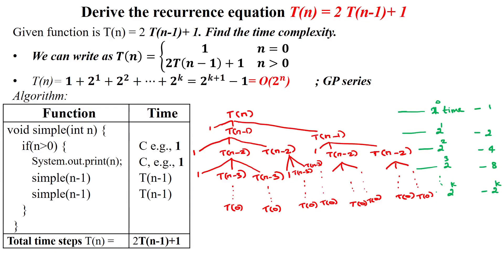Hello everyone. We are going to derive the recurrence equation for the given algorithm. This is a recursive algorithm. The if condition will run for one unit of time, that means a constant amount of time. Inside the if loop, whenever n is greater than zero, this statement will run for one unit of time.